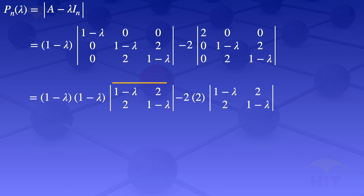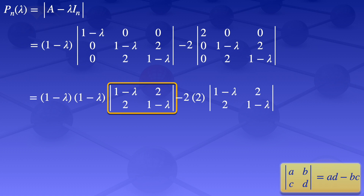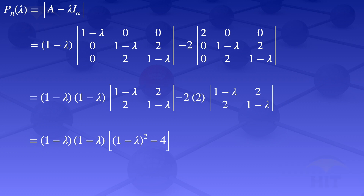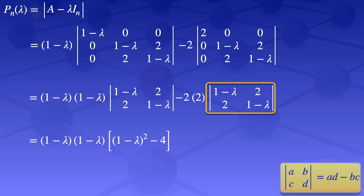The determinant of a 2×2 matrix A, B; C, D equals AD minus BC. Using that formula, the 2×2 determinant simplifies to 1 minus lambda squared minus 4. Substituting, we have 1 minus lambda times 1 minus lambda multiplied by (1 minus lambda squared minus 4). For the second part, minus 2 times 2 multiplied by (1 minus lambda squared minus 4), giving minus 4 times (1 minus lambda squared minus 4).